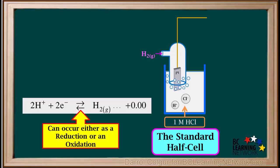The double arrow here reminds us that this half reaction can occur either as a reduction and proceed to the right, or as an oxidation and proceed to the left. The direction it goes depends on what other half cell it is connected to.